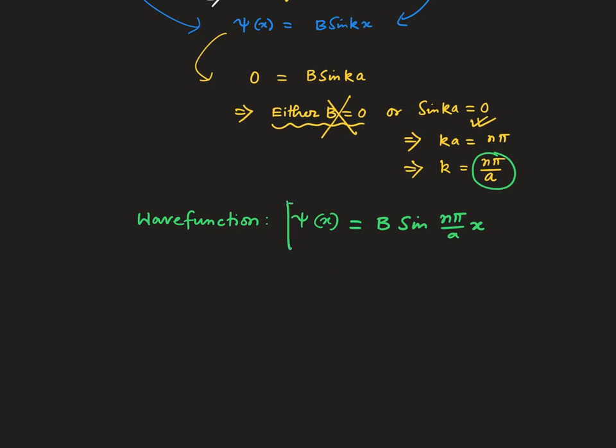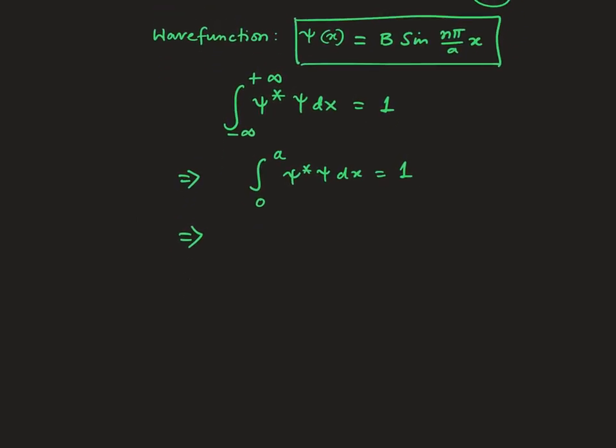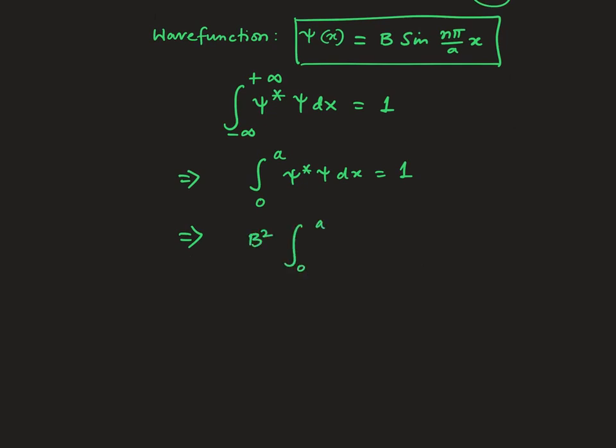So let us normalize this wave function. Normalization condition is integral from minus infinity to plus infinity, but you know that this limit is not from minus infinity to plus infinity; rather, it should be 0 to a because outside your wave function vanishes. So this is your normalization condition actually. So now this has to be B² integral from 0 to a of sin² nπx/a dx. Let us divide it by 2, 0 to a. Then you know the formula: it has to be 1 minus cos 2nπx/a dx equals 1.